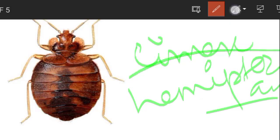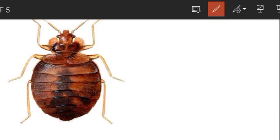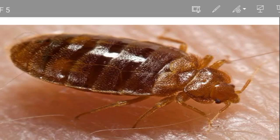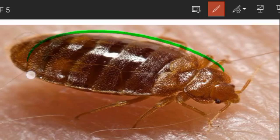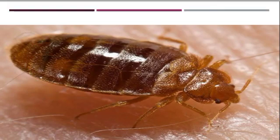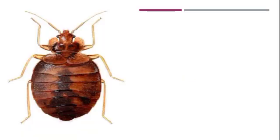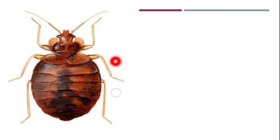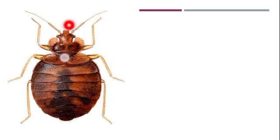Bed bugs are oval and dorso-ventrally flattened. They have very short hemi-elytra or the wings are completely absent, as they are ectoparasites. The diagram shows the head, thorax, and abdomen of this insect, commonly called the bed bug, Cimex hemipterus.